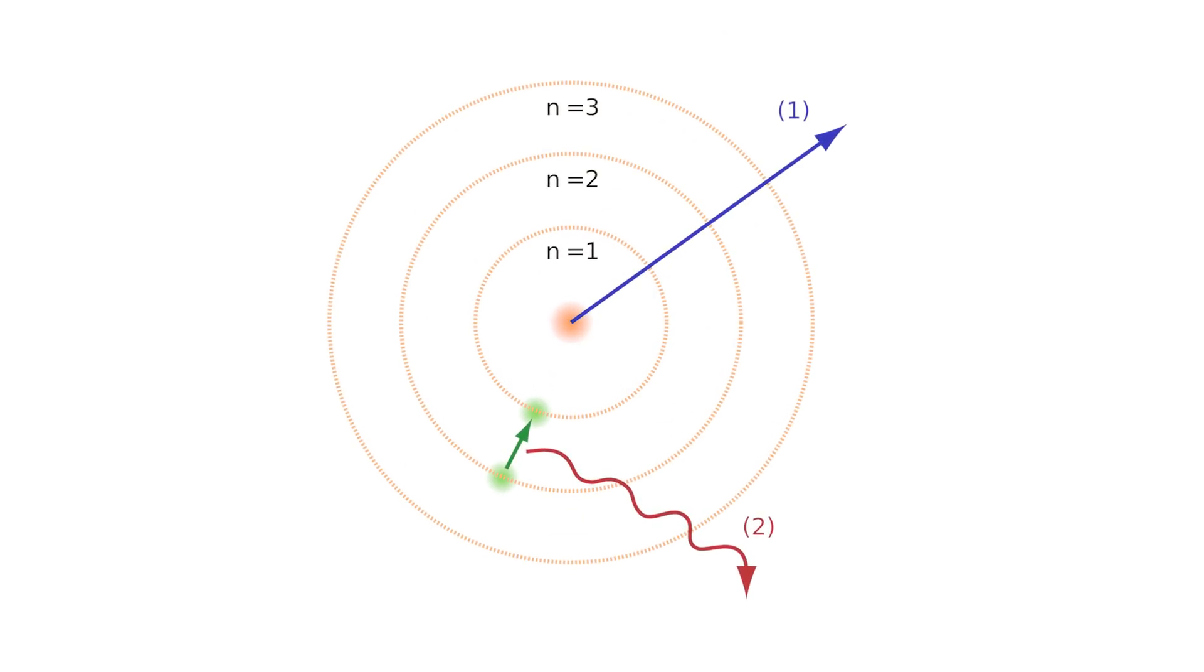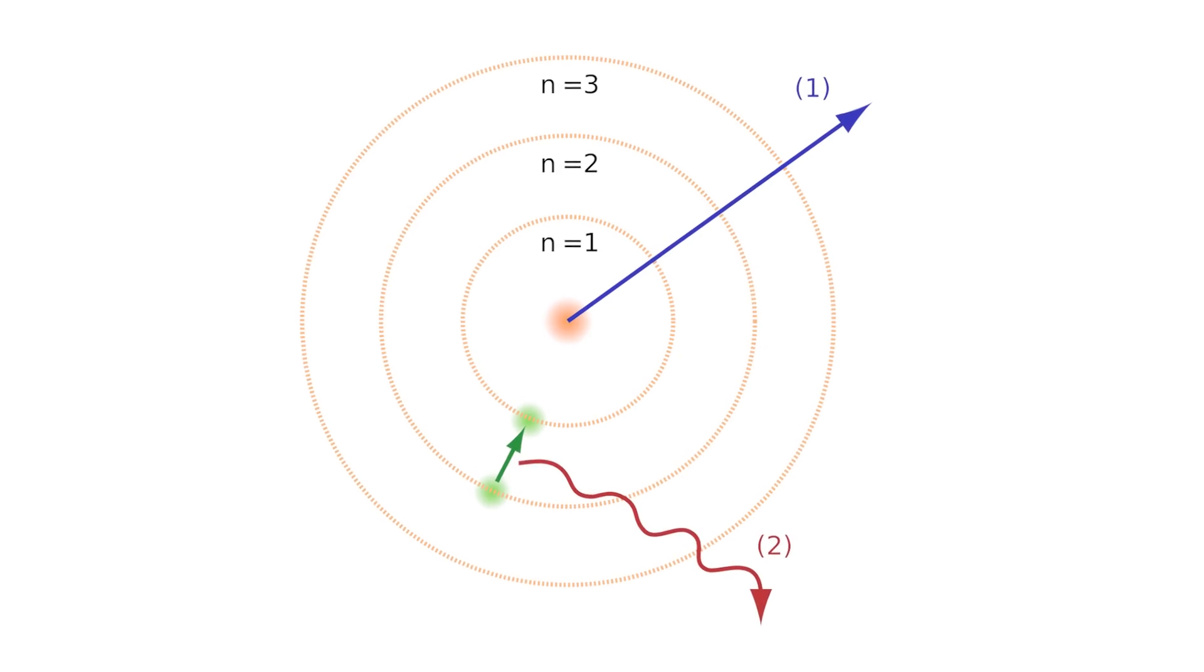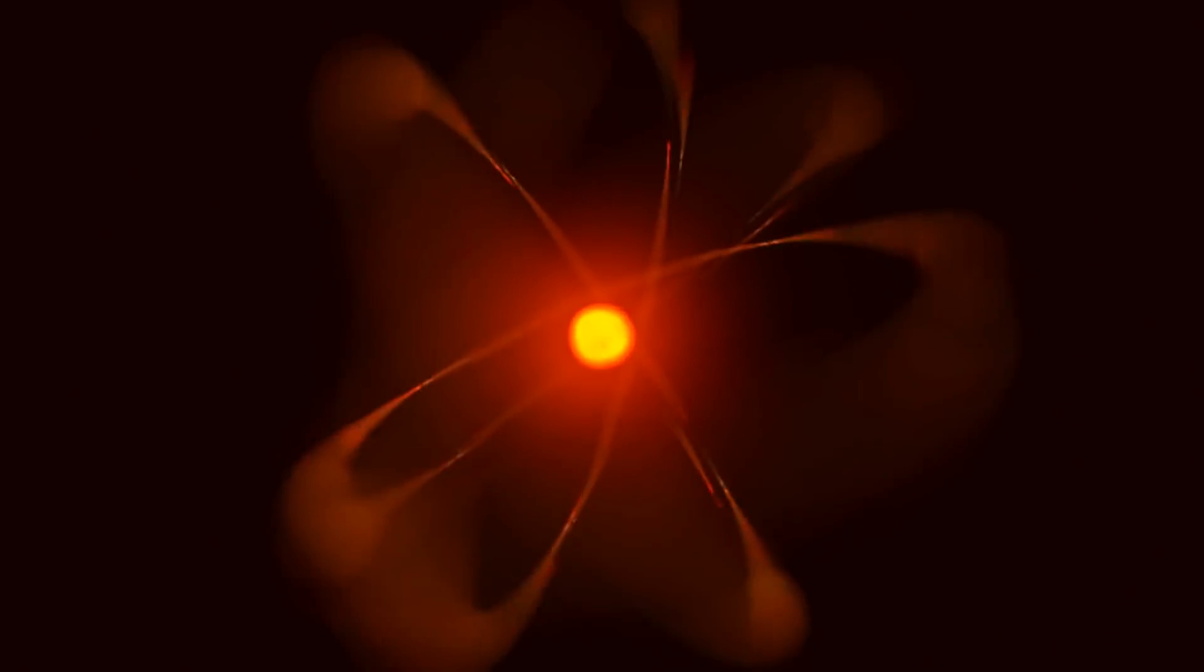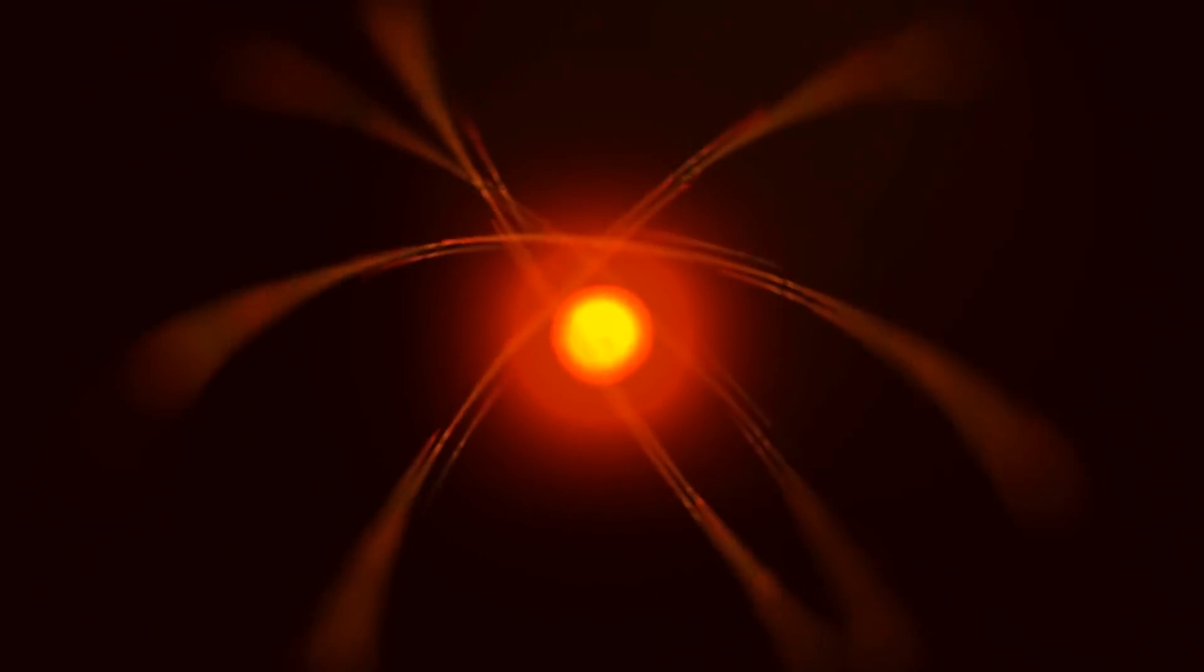This toy model was able to explain to a high degree the spectrum of emission of hydrogen atoms observed in the lab. Such work of theory and experiment going hand in hand was the way in which quantum physics was built.